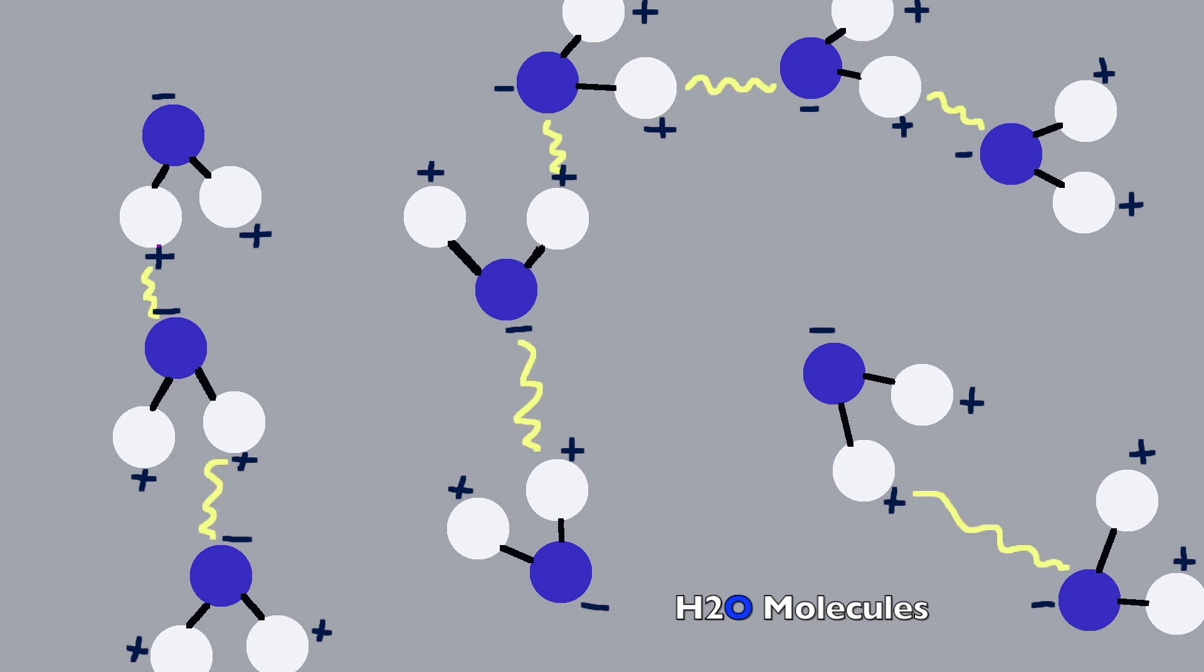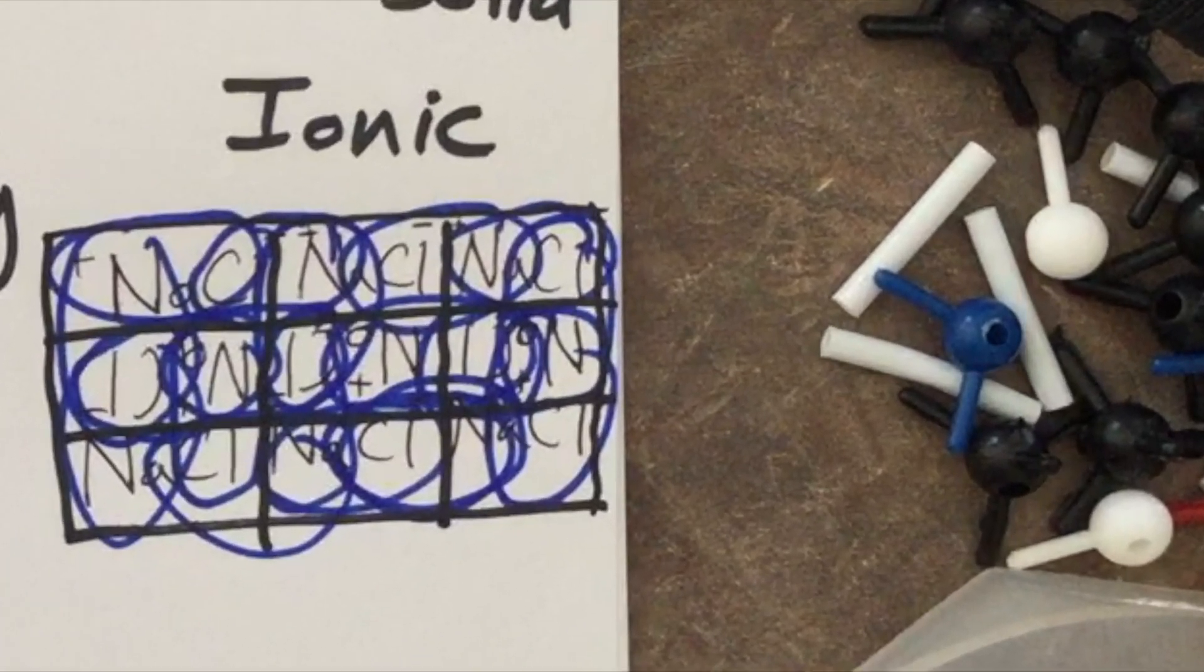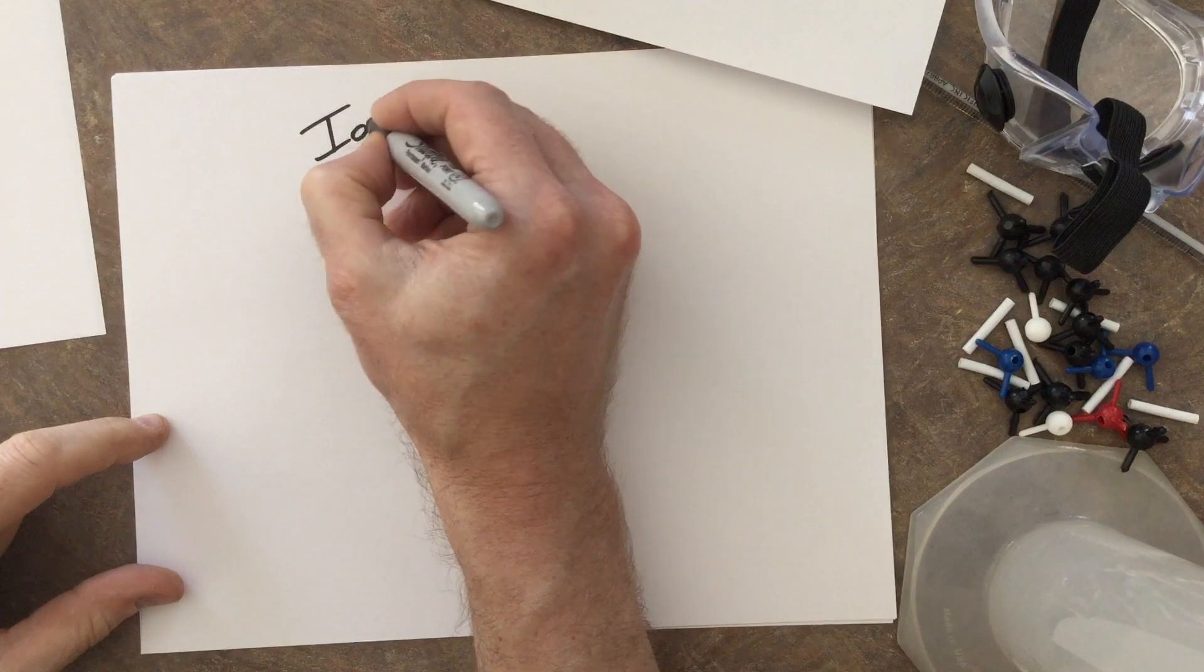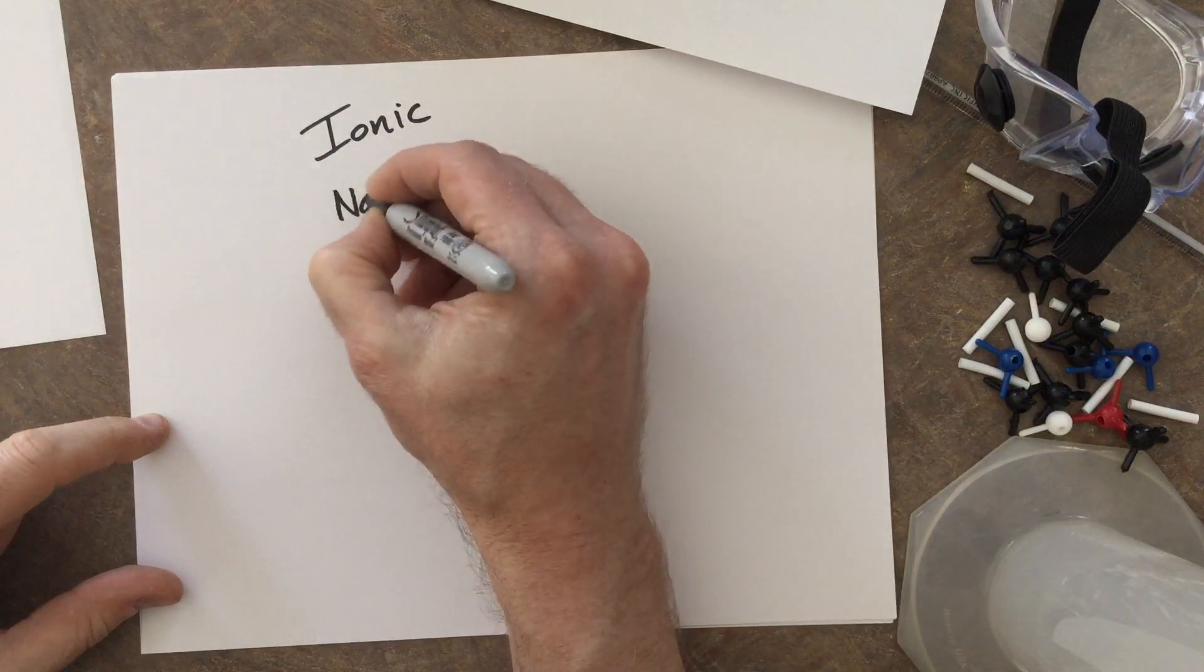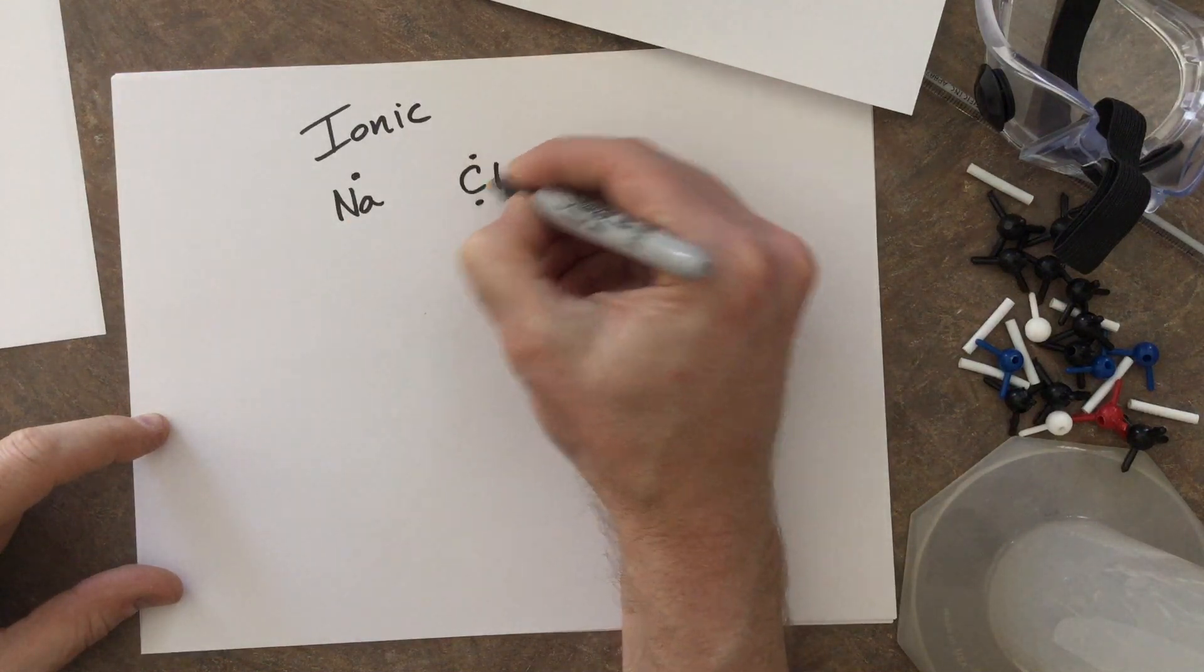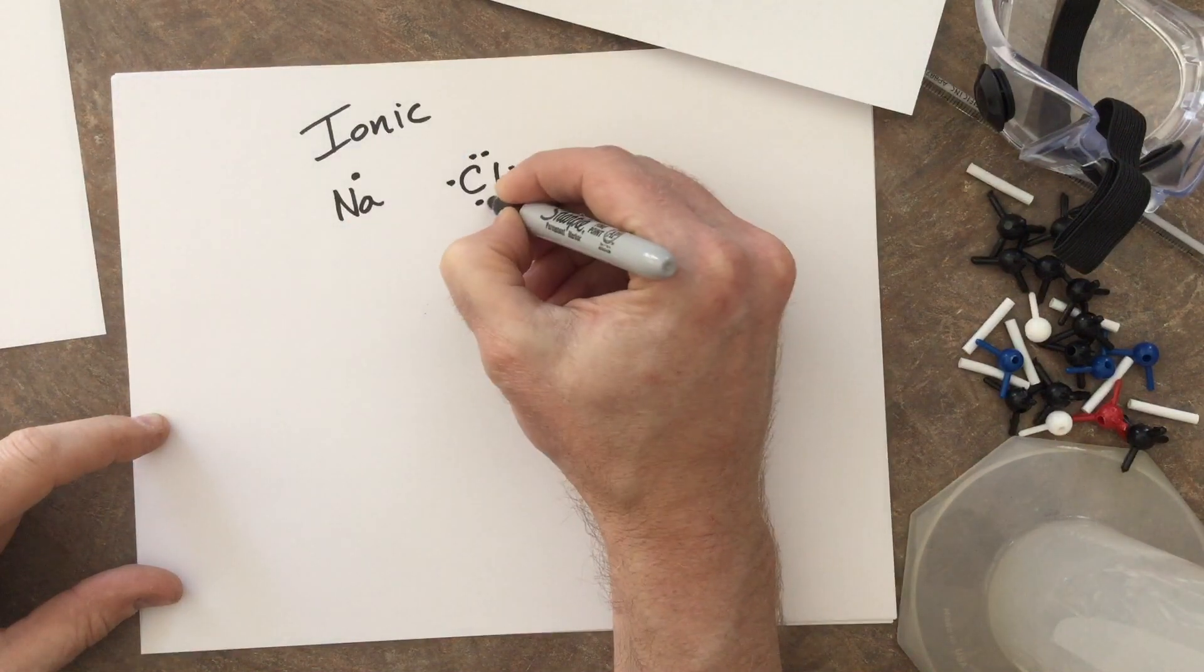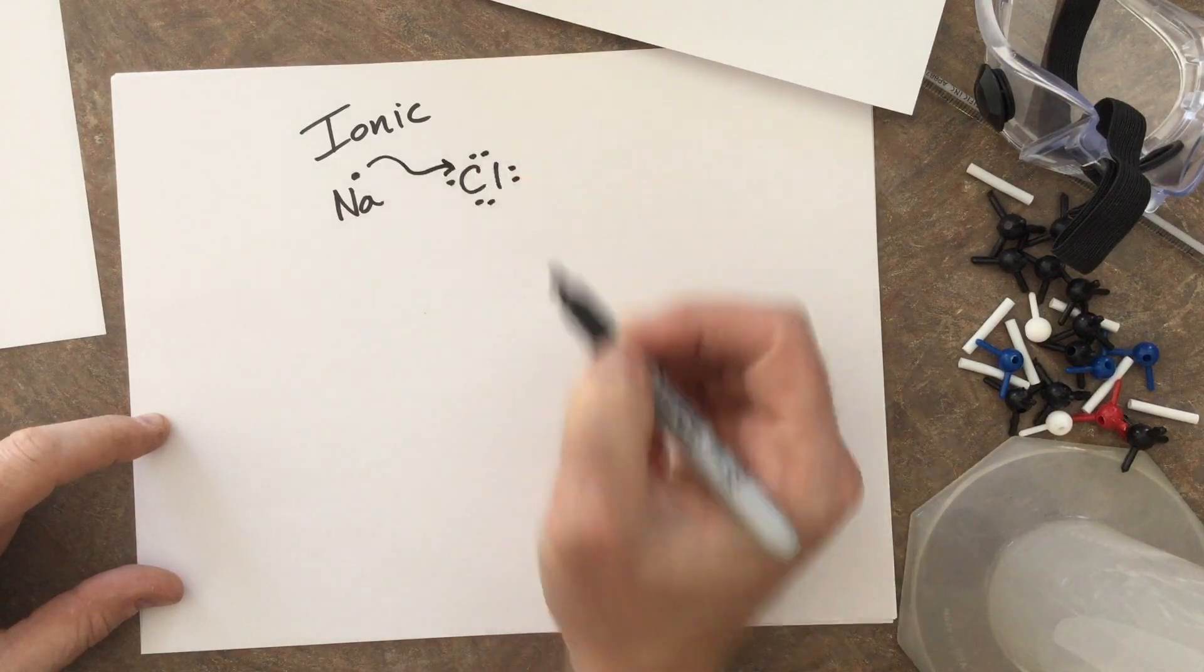And last but not least, we run into ionic bonds and their interactions as they take a molecule like salt. The sodium and the chlorine are not sharing the electrons. They have done a complete transfer because chlorine is so much more electronegative than sodium. And this relationship is great - sodium was glad to get rid of that outside electron and chlorine was glad to accept it. Now they both have full outside shells.